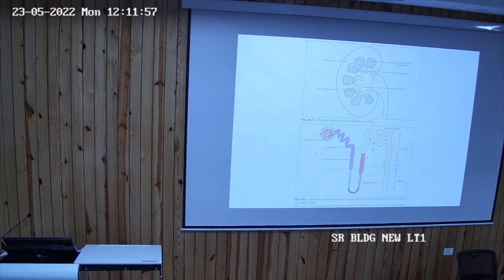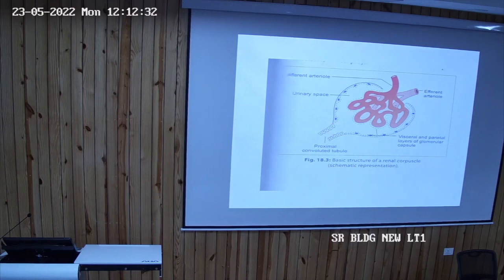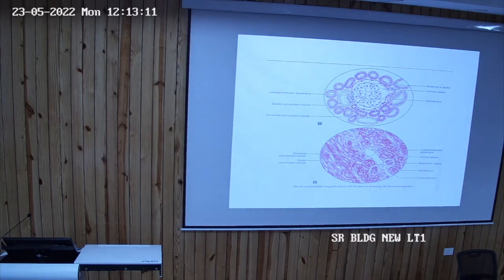Looking at the renal corpuscle separately, at the vascular pole the afferent arteriole enters and the efferent arteriole exits. The urinary pole is where the PCT starts. The space between the parietal and visceral layers is the urinary space. In the cortex you can see the Bowman's capsule, glomerulus, and surrounding parts of PCT and DCT — all present in the renal cortex.